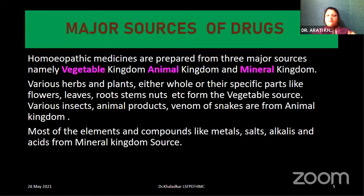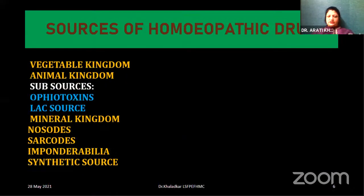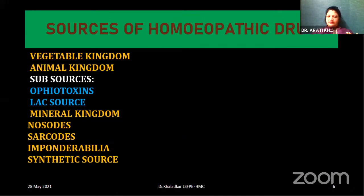Now let us see the major sources of the drug. There are three major sources: the vegetable kingdom, the animal kingdom, and the mineral kingdom. Various herbs and plants are used; specific parts are used; elements are used; metals are used; organic acids are used. Let us go to the enhancement of this particular topic.